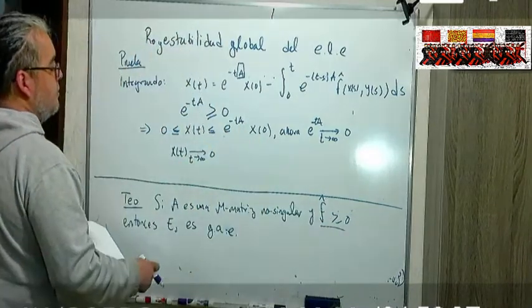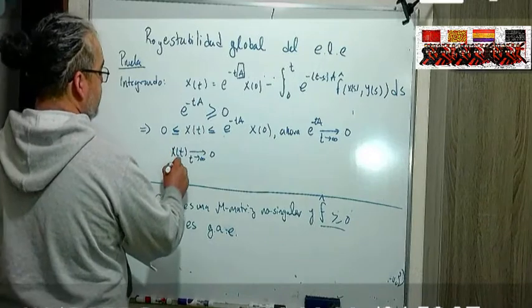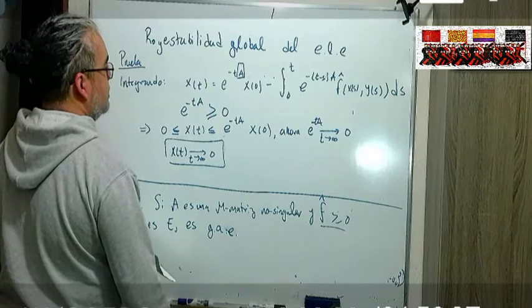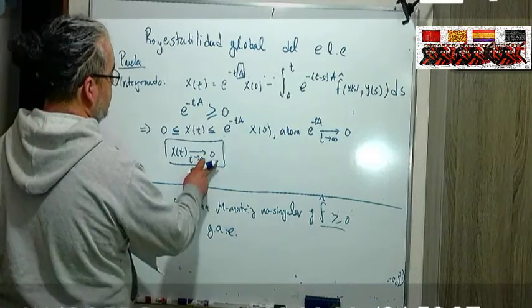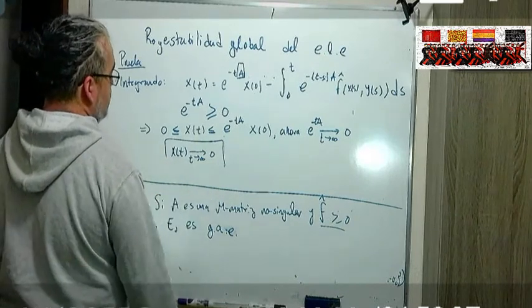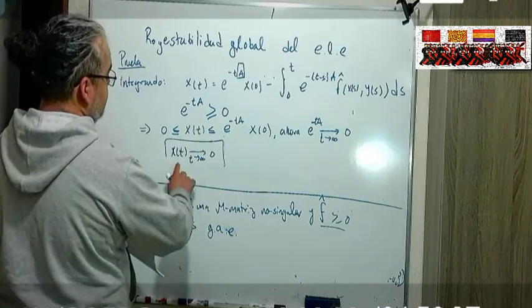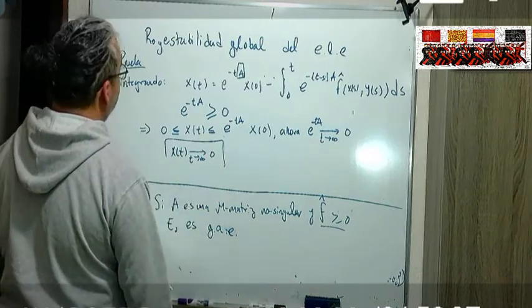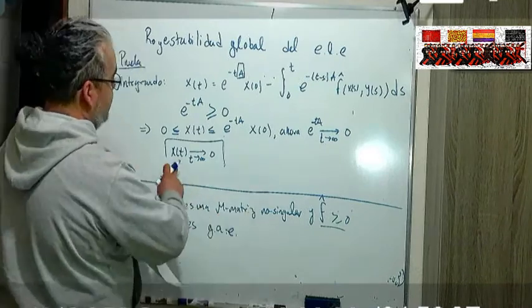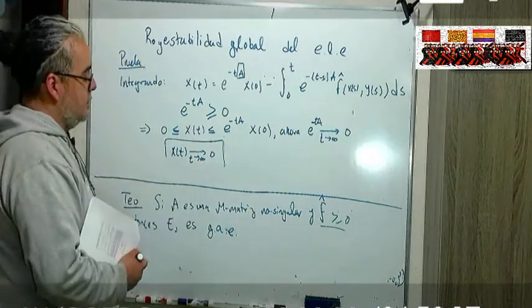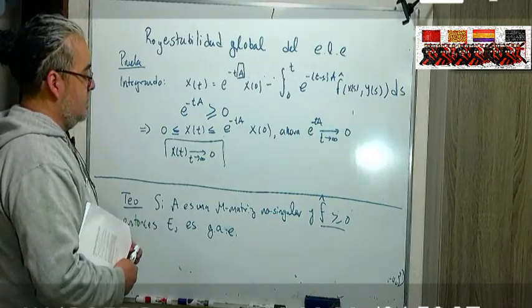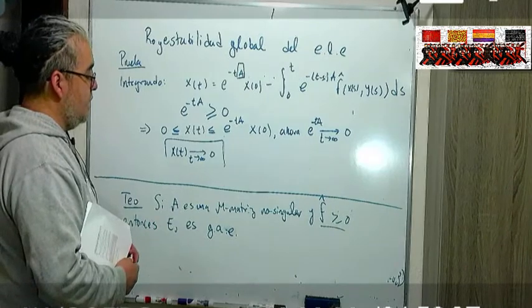Y esta condición, con esa nada más nos basta para ver que esto se aproxima ya globalmente en todo el intervalo que se está considerando, para todos los valores positivos de la x se va aproximar al 0, decir que el equilibrio libre de enfermedad es globalmente asintóticamente estable, se aproximan las soluciones ahí.